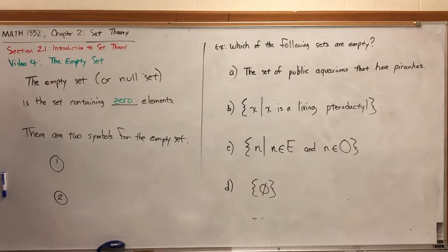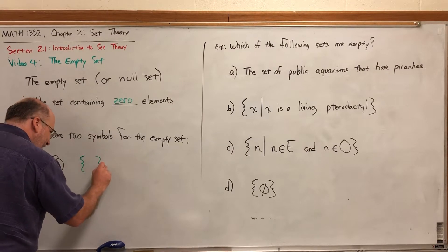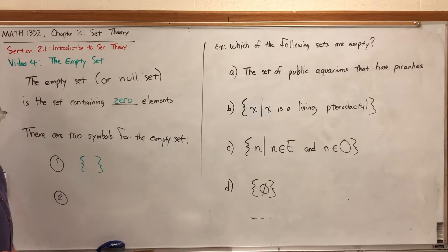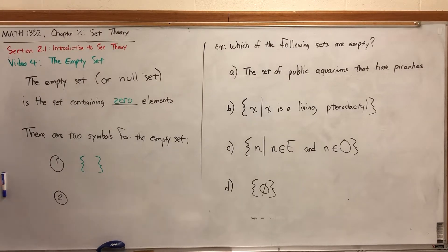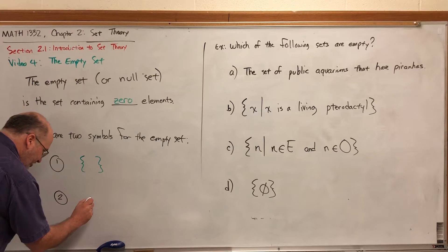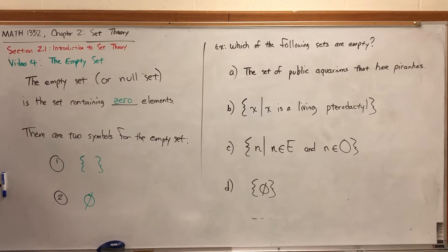There are two symbols for the Empty Set. One is literally an empty set in roster form: open a set, write everything it contains — which is nothing — and close it. But there's another symbol for the Empty Set you may have seen before: it looks like a zero with a diagonal slashed through it. Both of these are symbols for the Empty Set, a set that contains nothing.